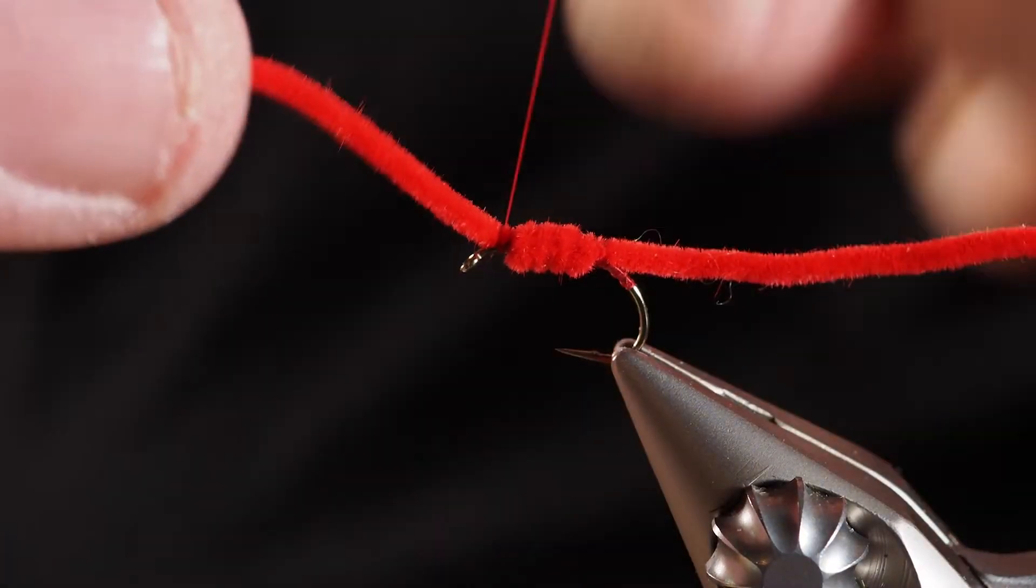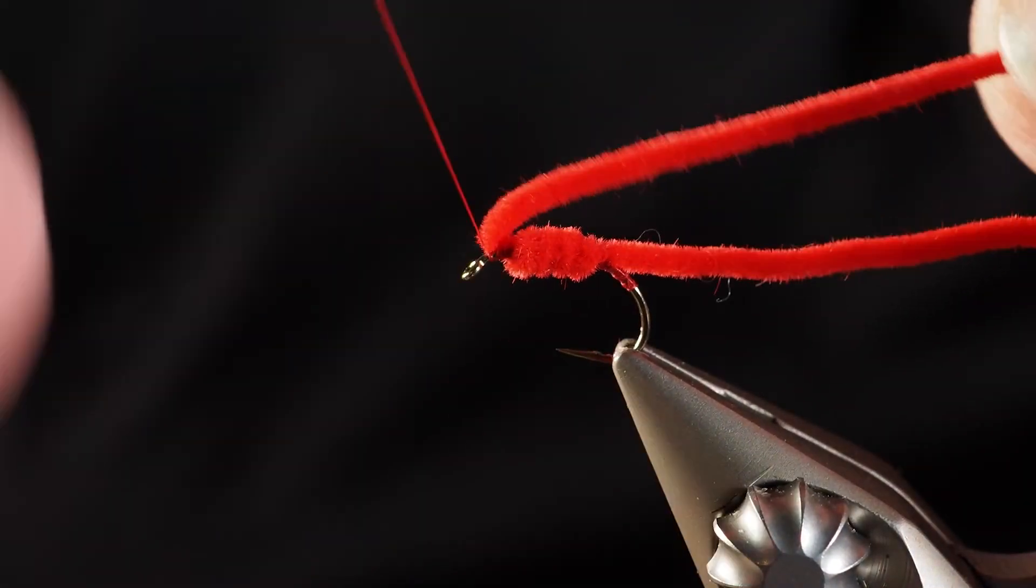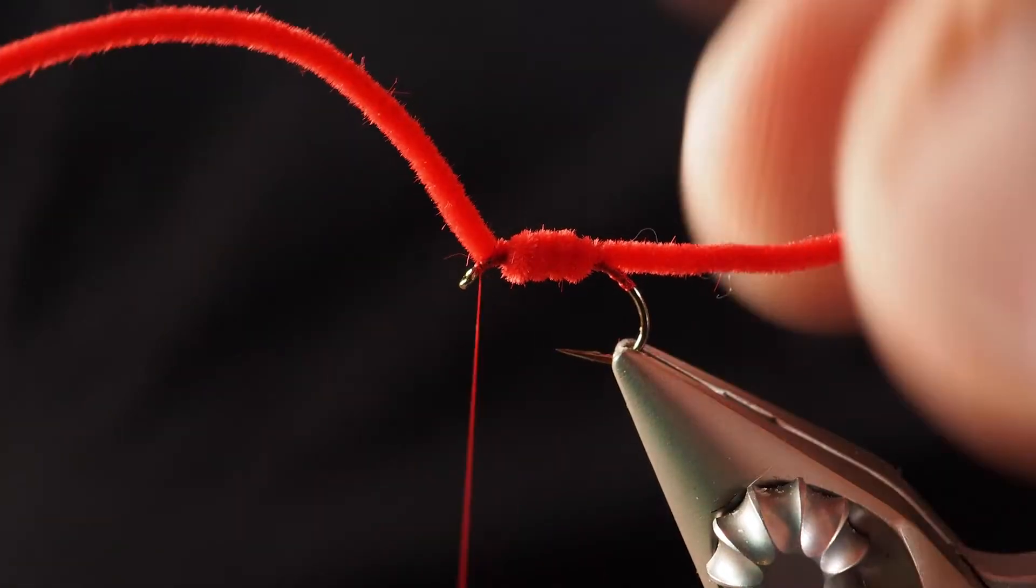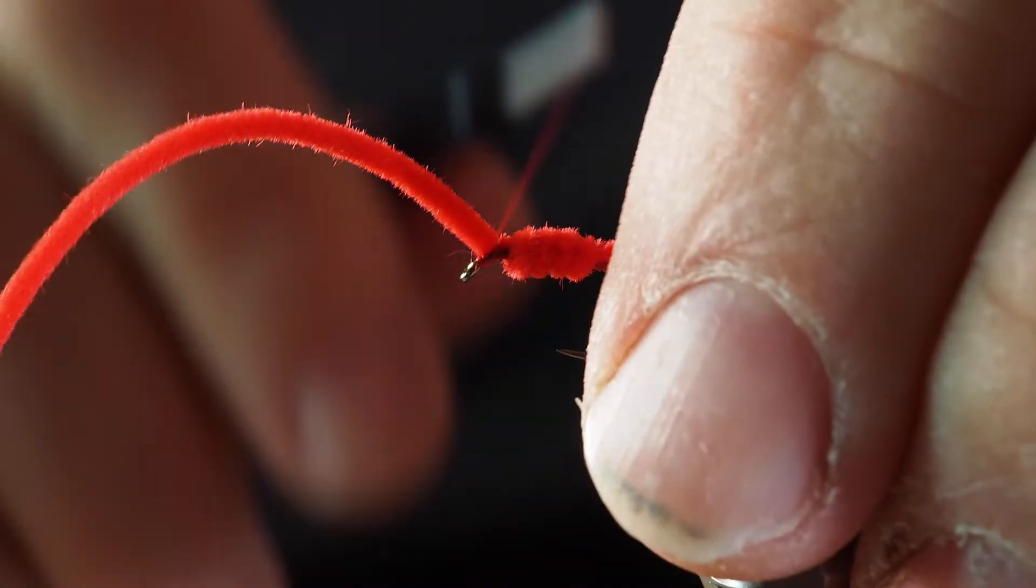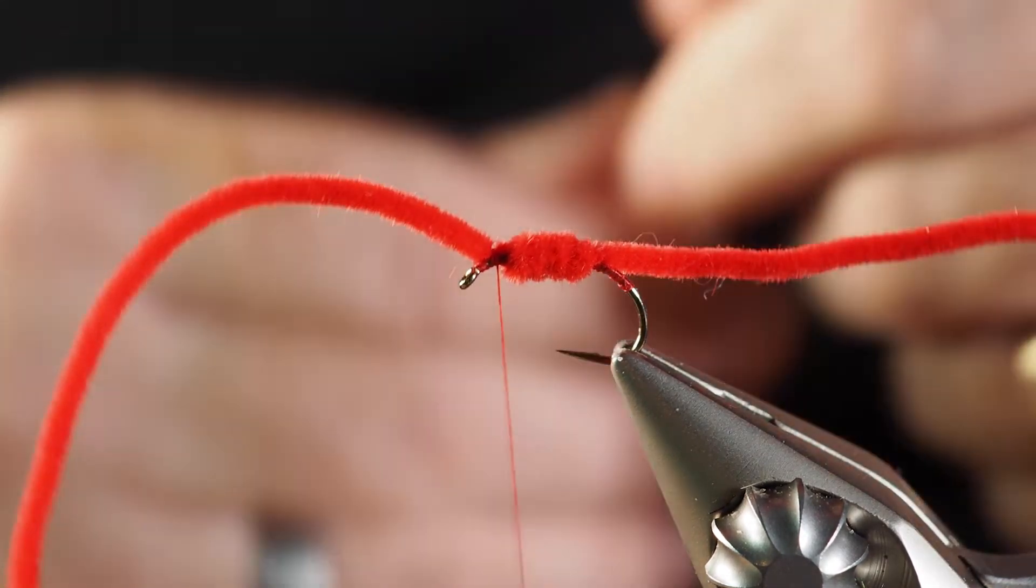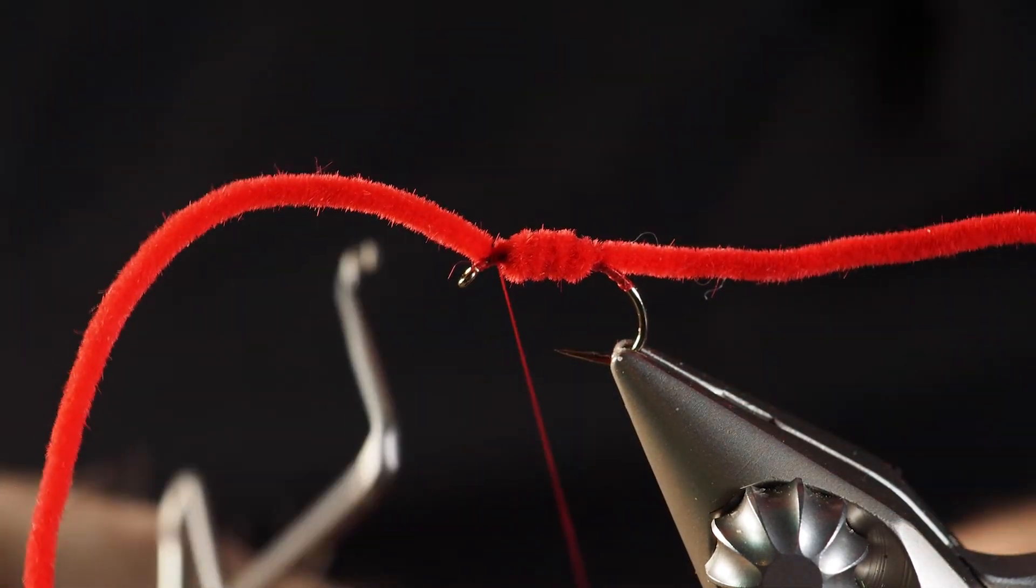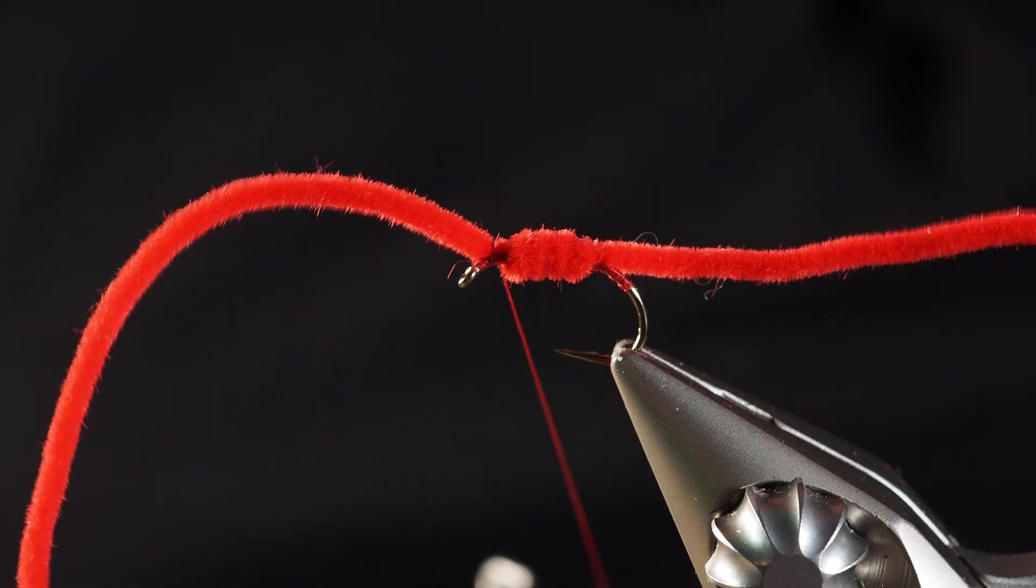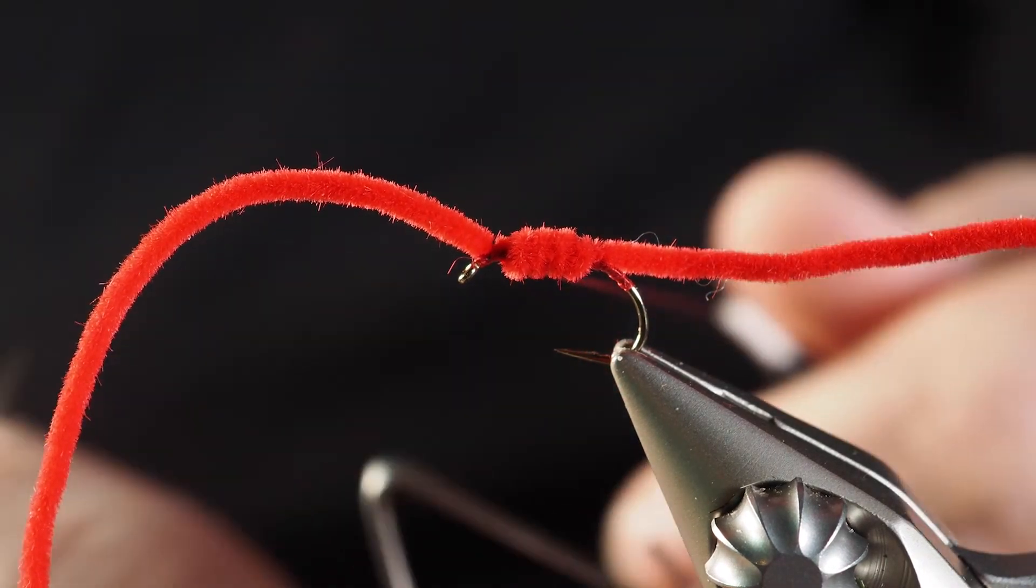I'm going to throw a couple of thread wraps here over this end, and pull that material back and get a couple of wraps on this side as well. And then for all intents and purposes, it's time now to just break out our whip finisher, which I've got right here. Give myself a little bit of thread and a whip finish behind the eye here.